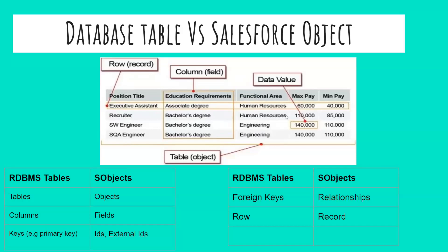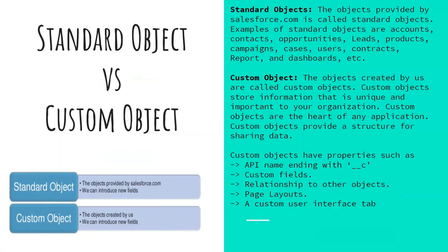Comparing an RDBMS table to a Salesforce object: a table equals an object, a column equals a field. The primary key is the ID or external key in Salesforce. A foreign key is a relationship — either a lookup relationship or a master-detail relationship. And a row is a record in Salesforce.